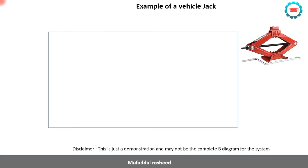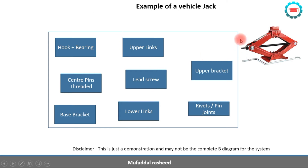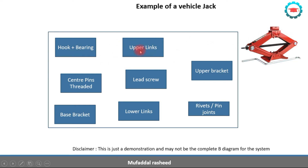Now let us make the boundary diagram for the scissor jack. This is the product boundary, and within it all parts are located: the rivets, the lower links, the lead screw, the center screw, the upper bracket, the base bracket, the center pins — this pin and this pin, which are threaded and through which the lead screw goes — the upper links, and the hook plus bearing.